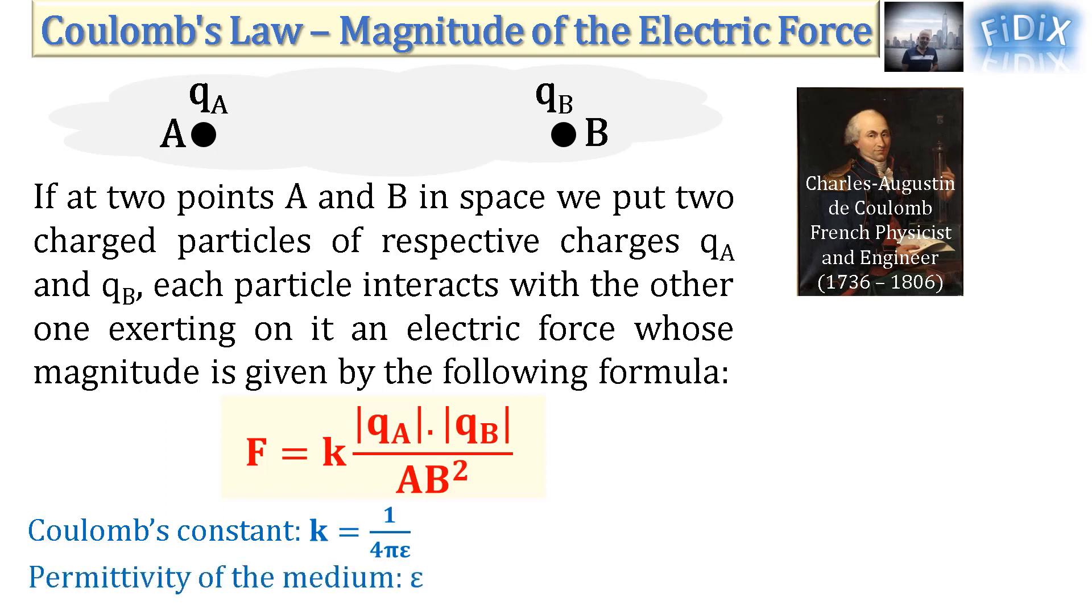In vacuum, epsilon is equal to one over 36 pi times 10 to the 9 SI. Replacing epsilon by its value in the expression of k, we get k equals 9 times 10 to the 9 SI in vacuum. In air, k has approximately the same value.